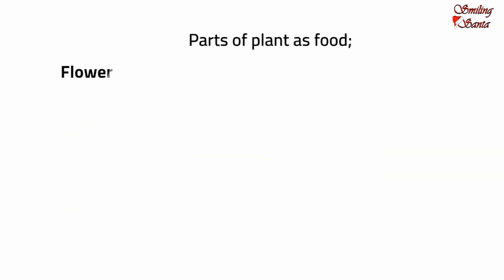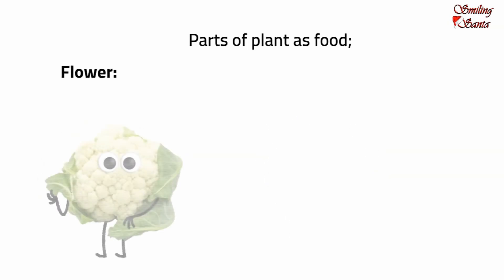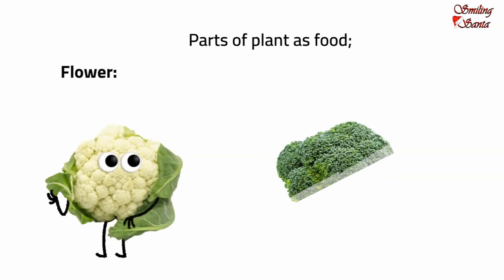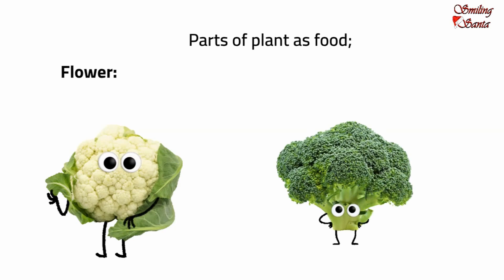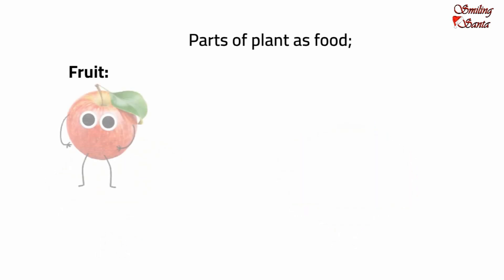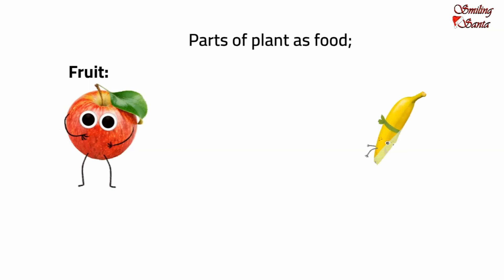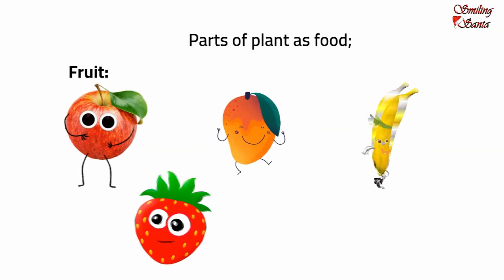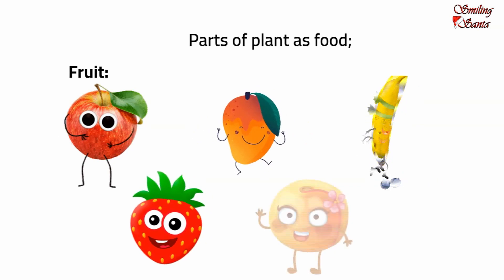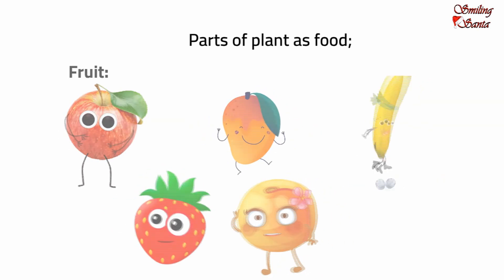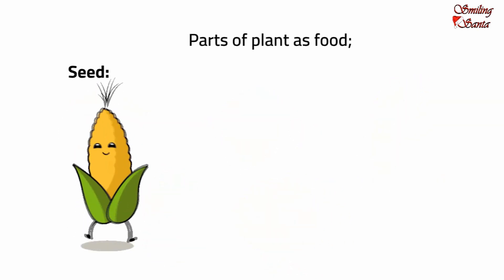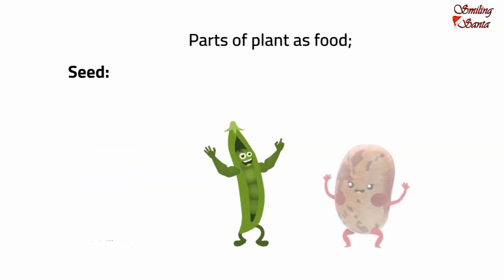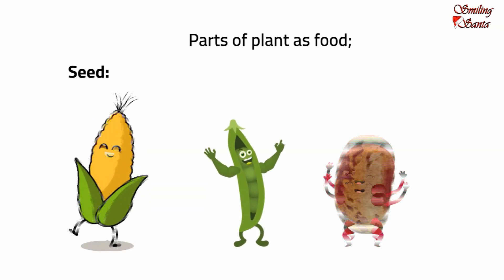We eat flowers such as cauliflower and broccoli. We eat fruits such as apple, banana, mango, strawberry, and orange. We eat seeds such as corn, peas and beans.